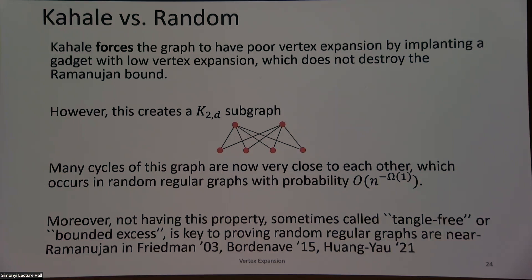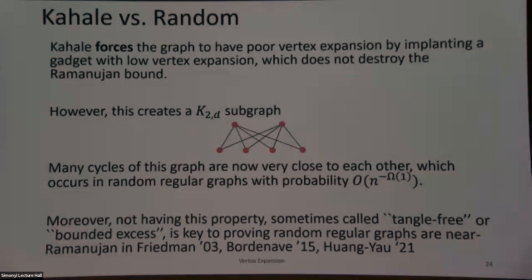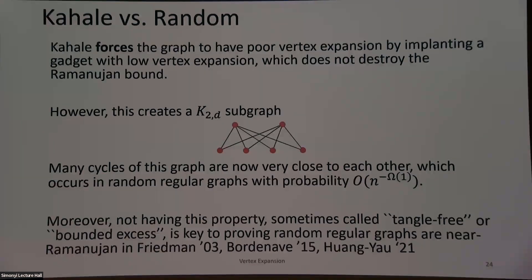What we're doing is creating a K_{2,D} subgraph, which creates many cycles on top of each other — very unlikely to happen, polynomially small probability in a random regular graph. For the three proofs of Friedman's theorem that I know — Friedman, Bordenave, and Hoory-Yau — this is really a key quantity. This is called tangle-freeness or bounded excess: the idea that if I have cycles in my graph, they're all spread apart.